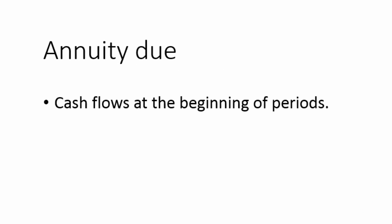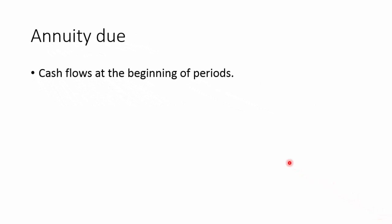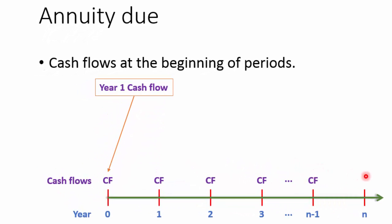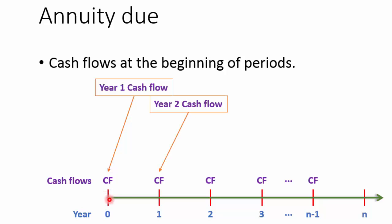Now let us discuss about annuity due. The annuity due is different from ordinary annuity because it generates cash flows at the beginning of periods. If you look at the cash flow timeline again, the year 1 cash flow is generated not at point 1 but at point 0, because point 0 is the beginning of year 1. Similarly, the year 2 cash flow is generated at point 1.